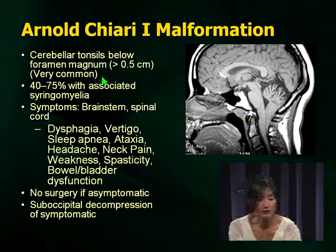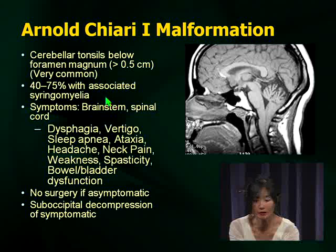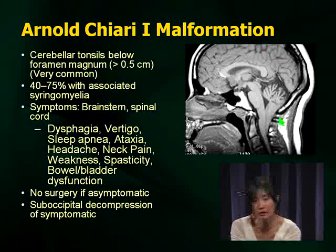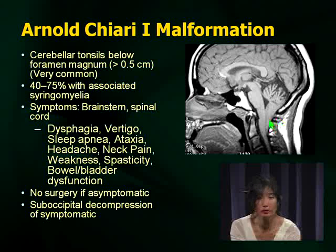What's important? Again, associated findings. Syrinx is extremely common in Chiari malformations. When you have a child with a Chiari malformation, you don't just want to admire it — think about what associated findings might lead to intervention. A syrinx is one. Remember to get a cord image if you have a child with a Chiari malformation.